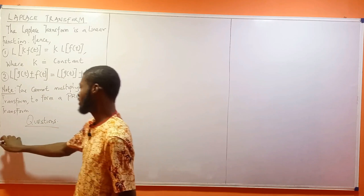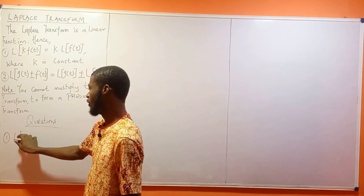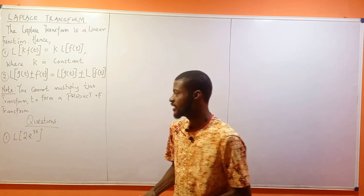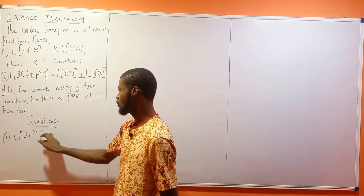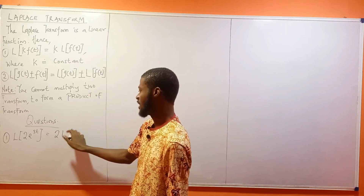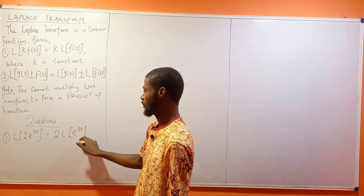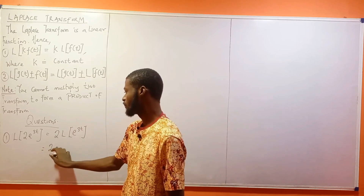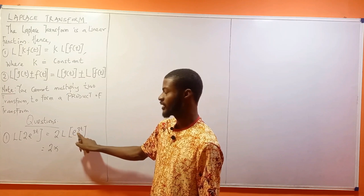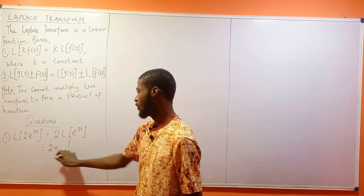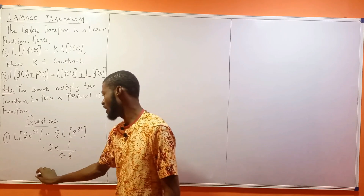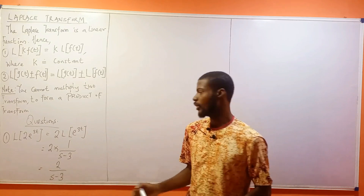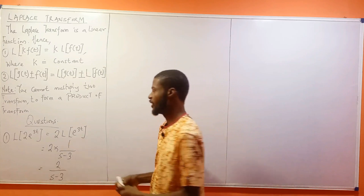The first question: what is the Laplace transform of 2·e^(3t)? The first thing to note is that 2 is a constant, so this becomes 2 times the Laplace transform of e^(3t) — I've factorized the 2 out. The Laplace transform of e^(3t) is 1 over (s minus 3), so the final answer is 2 over (s minus 3).